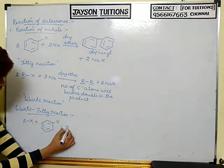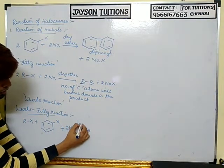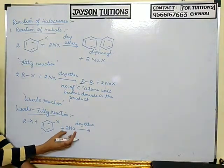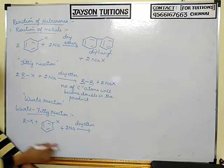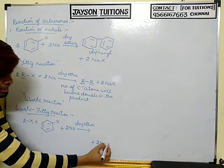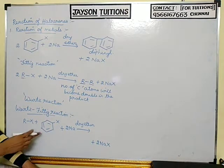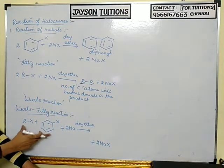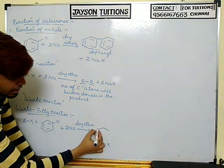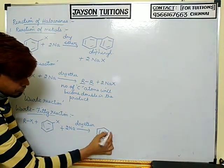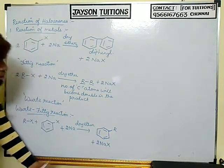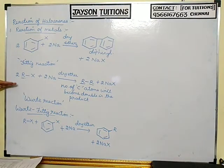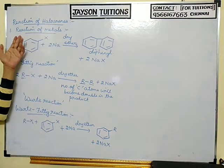In the Wurtz-Fittig reaction, one halo-alkane and one halo-arene react with 2 sodium in dry ether. The 2 sodium combines with the two X groups to form 2NaX. The remaining benzene ring and the R group combine to give an arene with an attached alkyl group. This covers the reaction of metals.